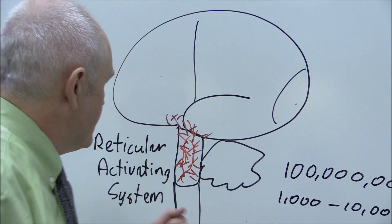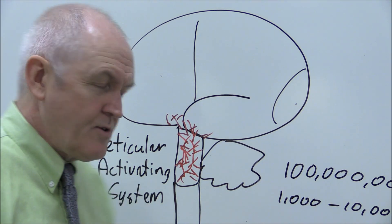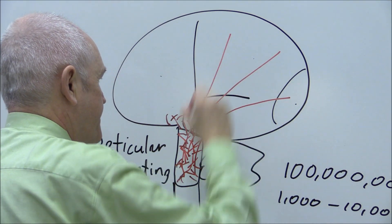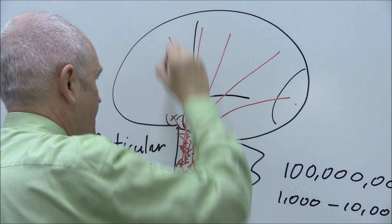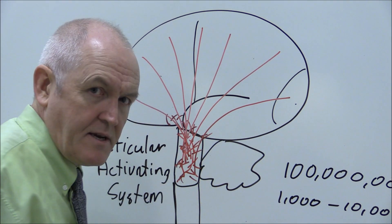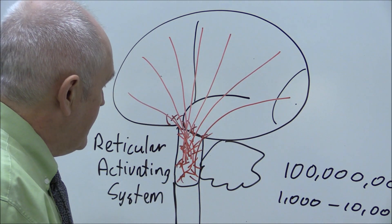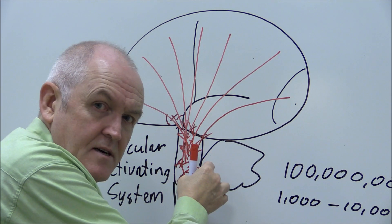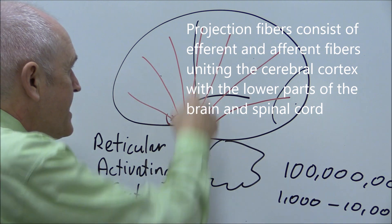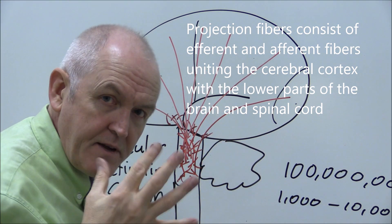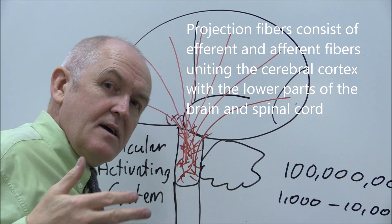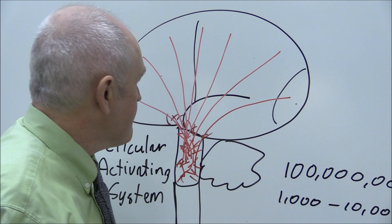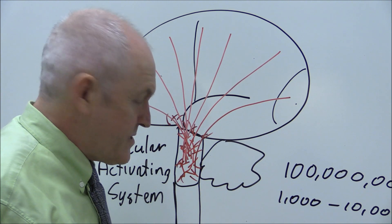What happens is that white axonal fibers go from the brainstem to all parts of the brain, radiating out to all parts of the brain. In a sense, that is transmitting the consciousness from the brainstem to the cerebrum, where we feel and are aware of it — where we are conscious of it.